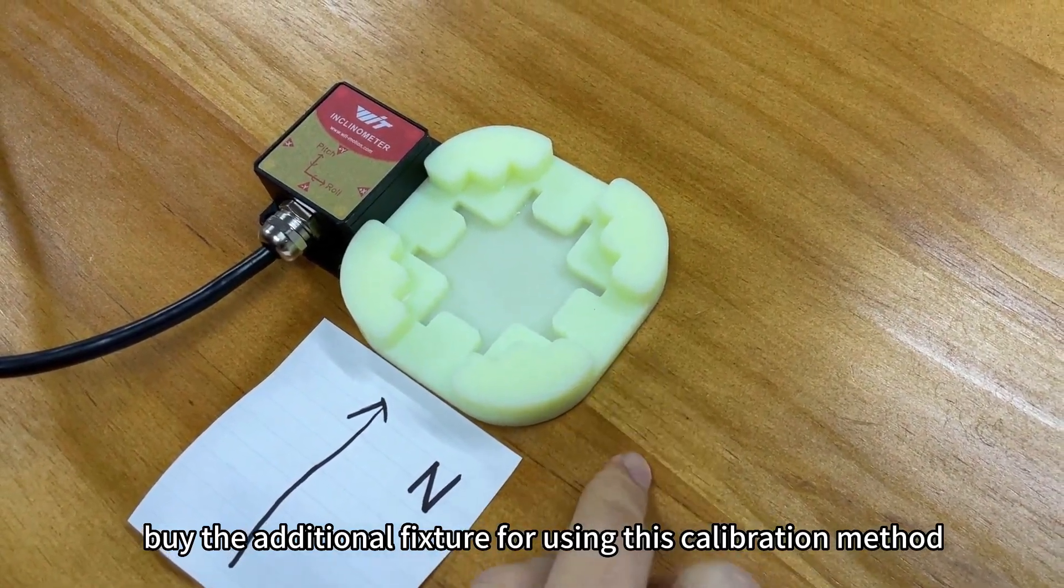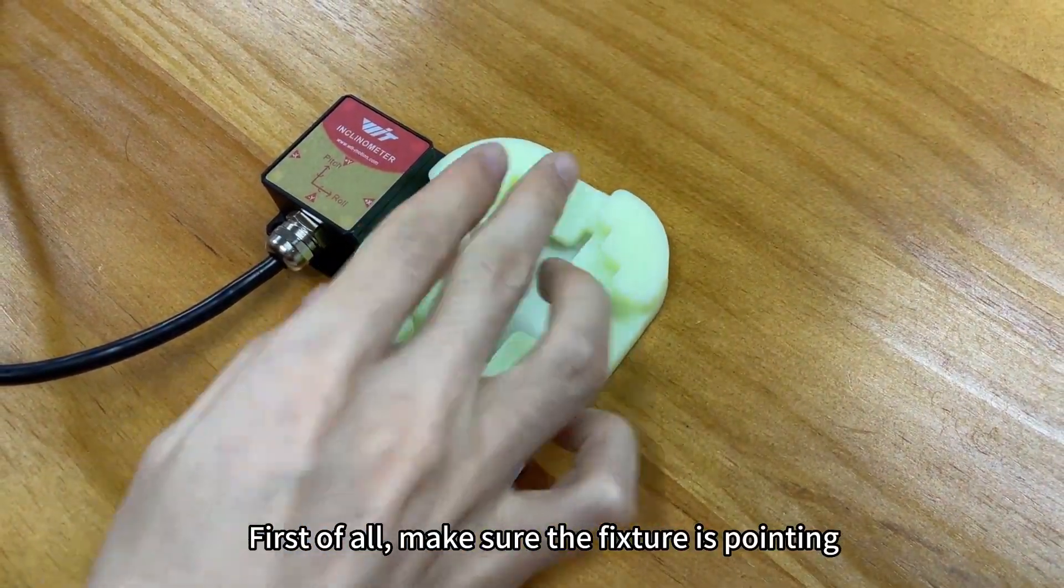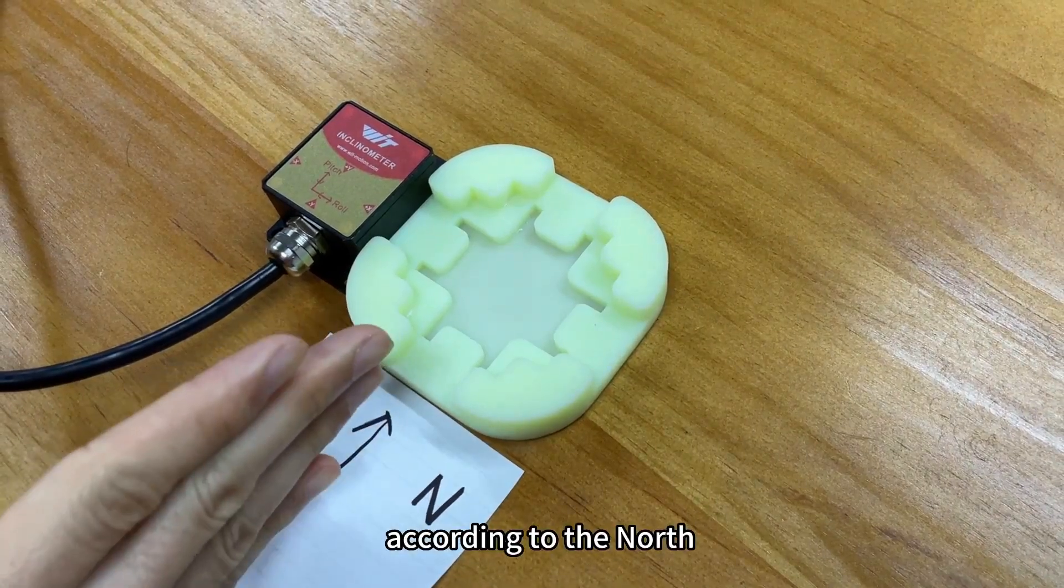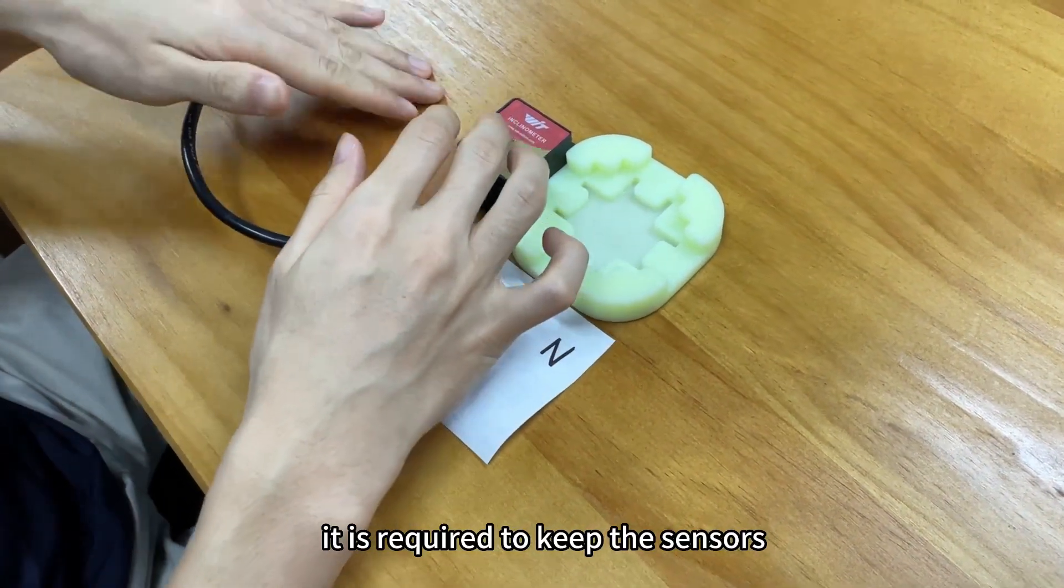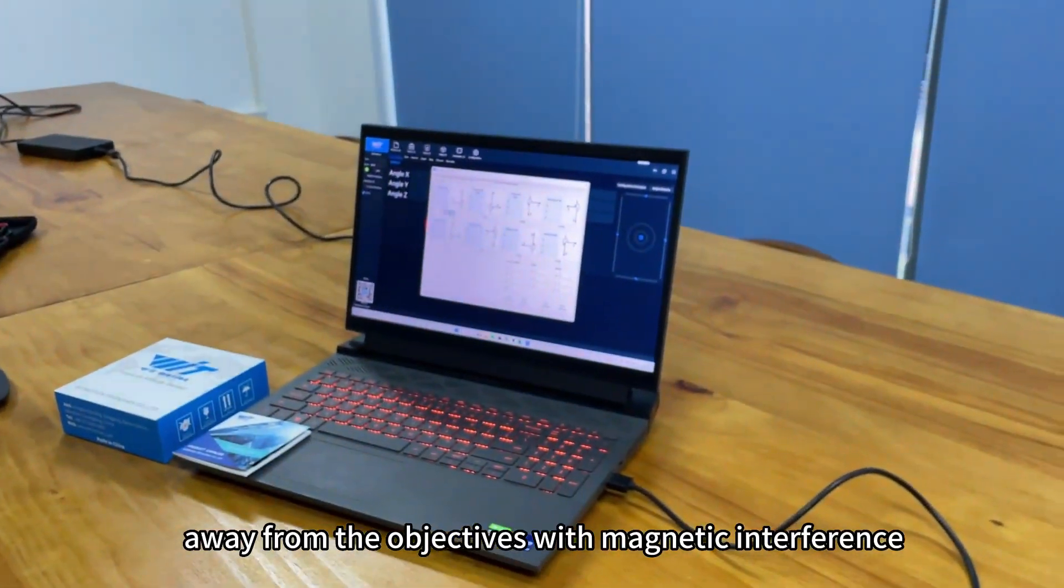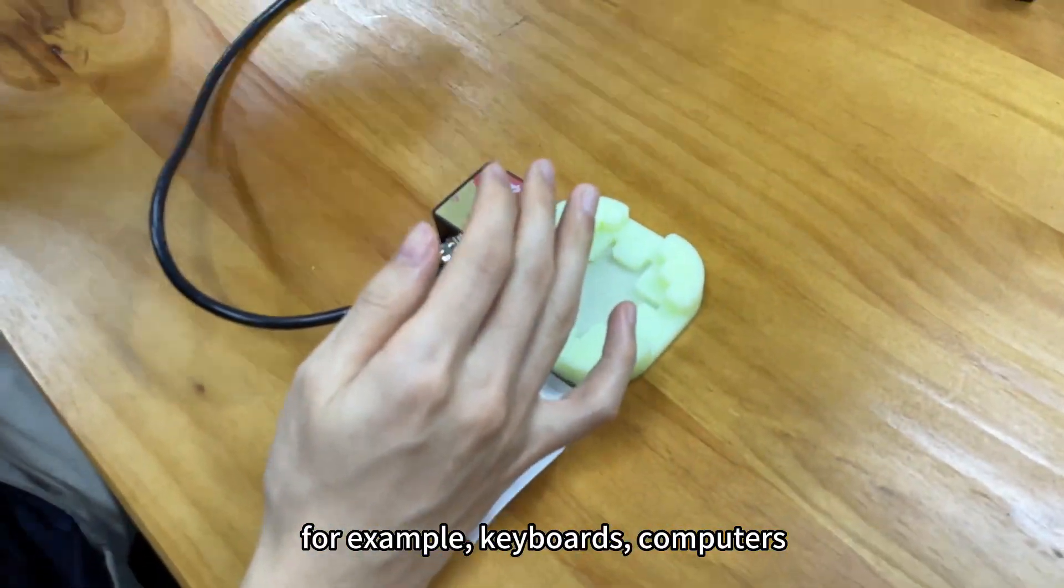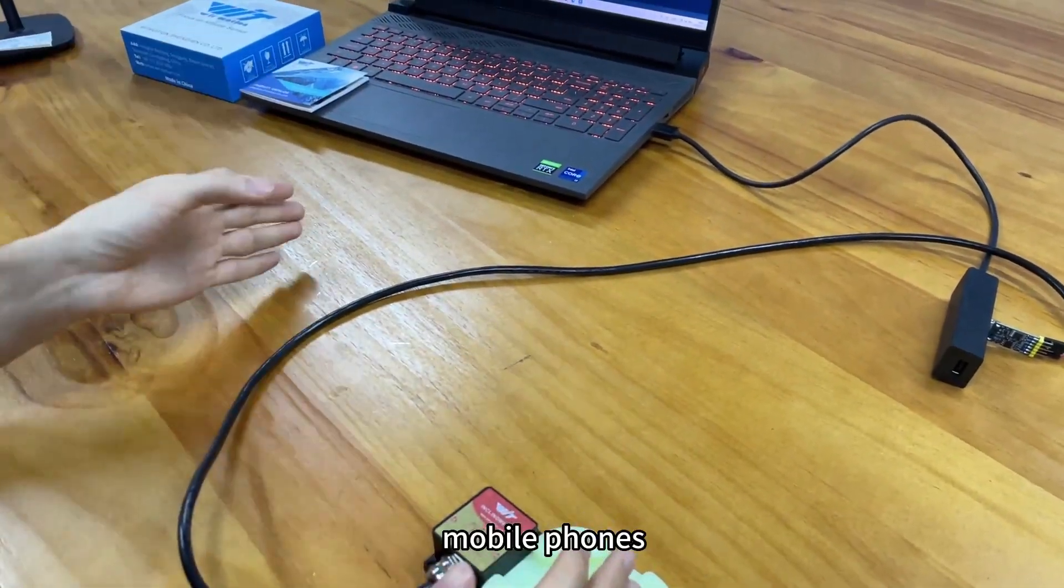First of all, you need to make sure the fixture is pointing according to north. It is required to keep the sensors away from objects with magnetic interference, for example, keyboards, computers, and mobile phones.